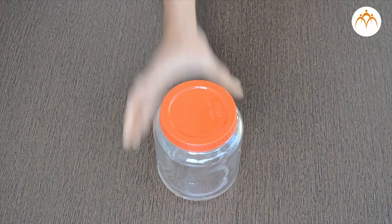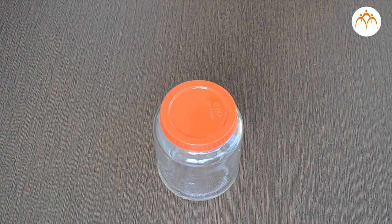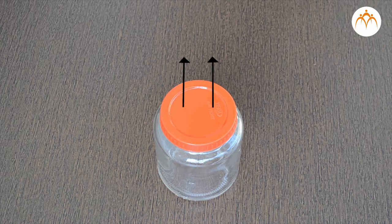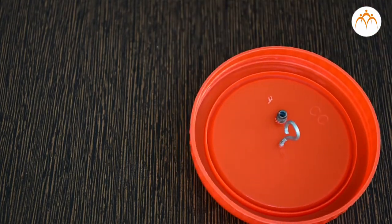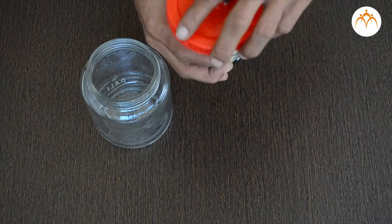This glass container is airtight. No air can enter or escape when closed properly. A small plastic tube is attached to the lid. With the help of this cycle wall we will hang the speaker here with the help of thread.